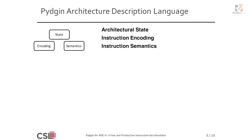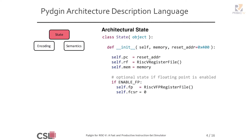When you want to write your architecture, your ISA — for instance RISC-V — the first thing you'll touch is the architectural description language. There are three aspects: the architectural state, the instruction encodings, and instruction semantics. Architectural state uses just a Python class, containing the usual things such as your program counter, register file, and memory. It can also include optional floating point state or statistics-related things such as number of instructions.